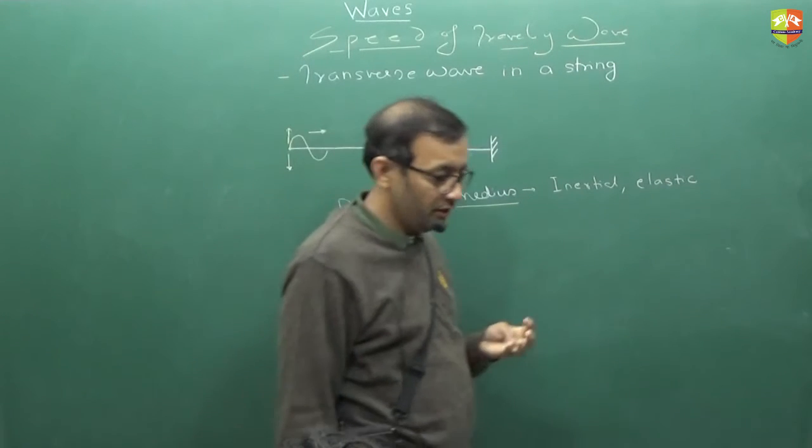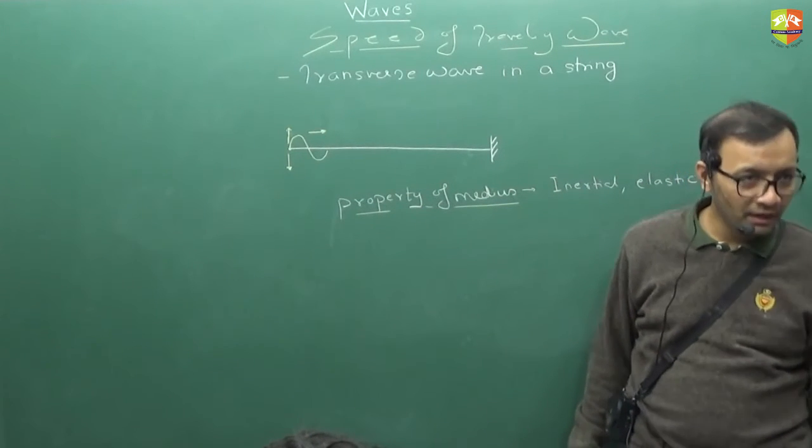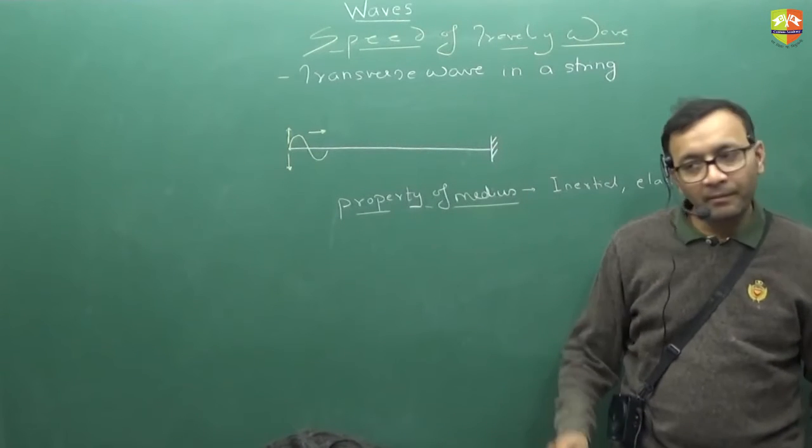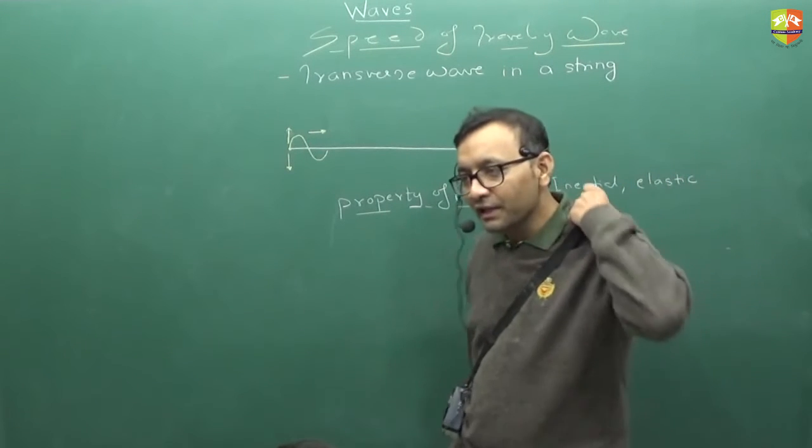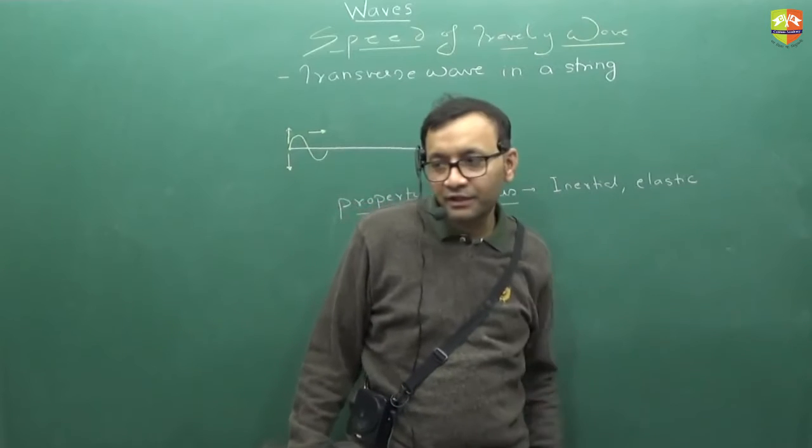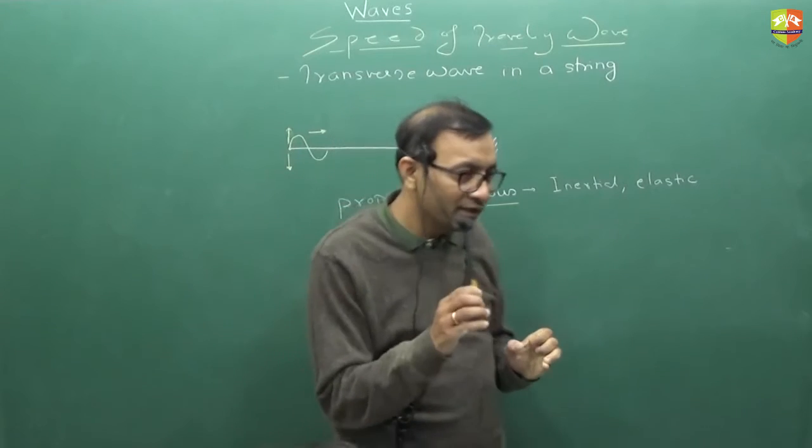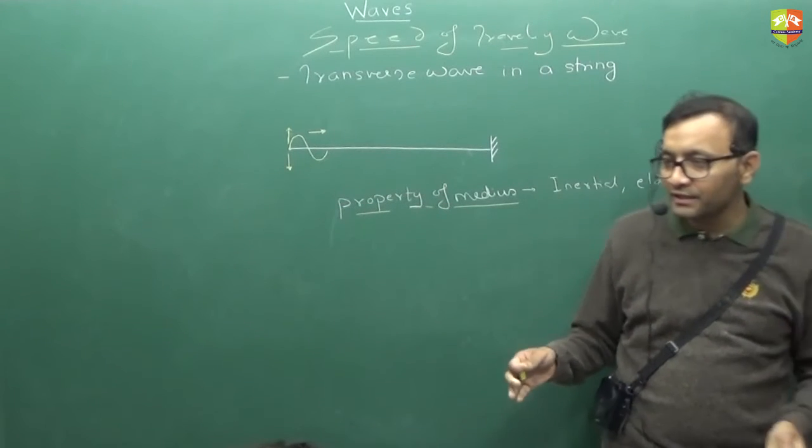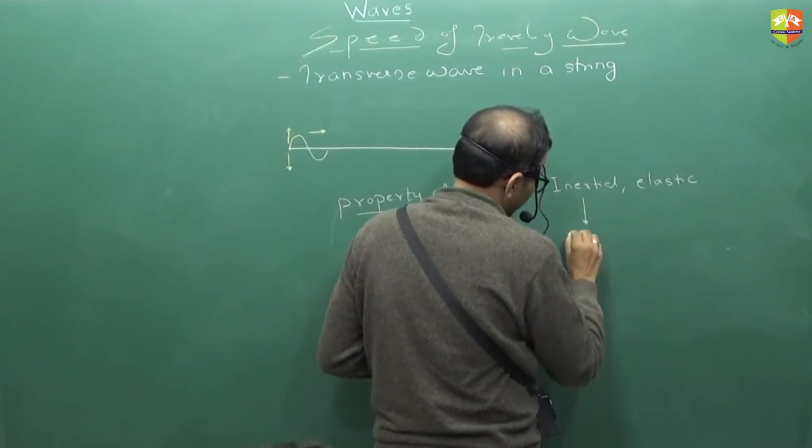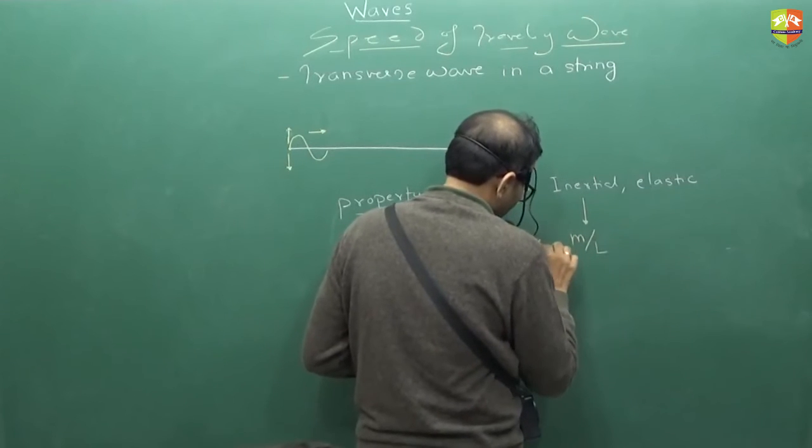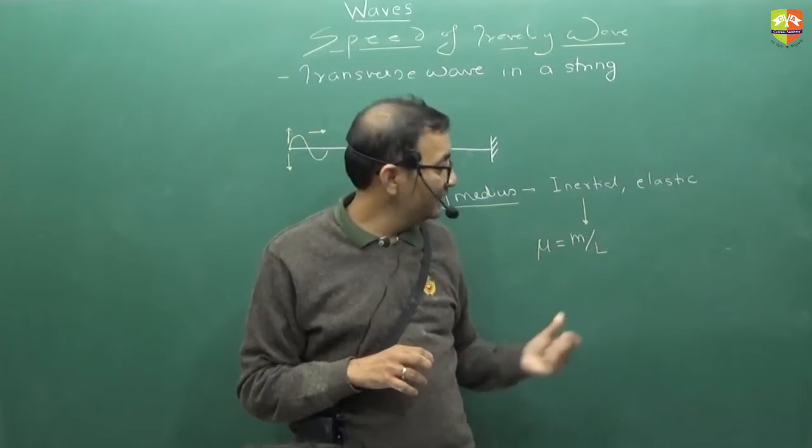It is inertial and elastic. When I talk about inertial, what I mean to say is that inertial represents mass. Now if I take a bigger string, will my mass increase? Mass will increase, inertia will increase. But will velocity get affected if I take a bigger or shorter string? No. But it should depend on some sort of inertia. So basically the only thing that is constant between the bigger and the smaller string is mass per unit length. So inertial property is quantified as mass per unit length. This is represented by letter mu. Mu is mass per unit length. This is inertial property.